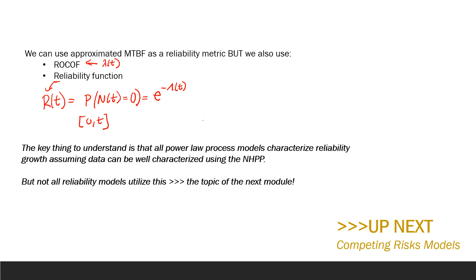So, now we have covered some of the pertinent Poisson process-based models. The key thing to understand is that all of these models characterize reliability growth, assuming data can be well characterized using the NHPP. The next models we consider use the competing risks framework, which does not start from the NHPP.